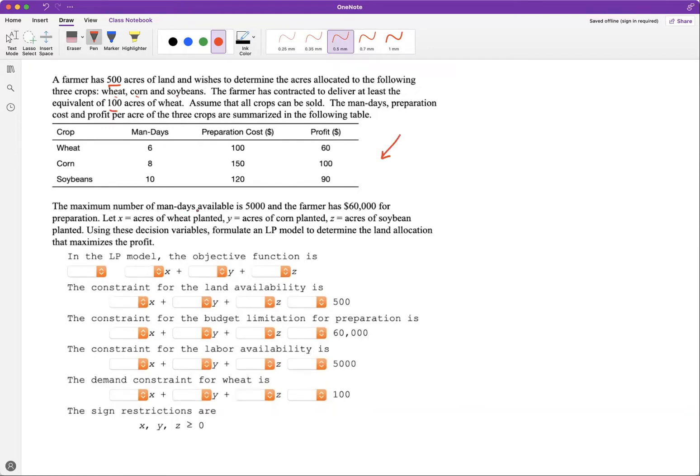So the maximum number of man-days available is this much, and the farmer has this for preparation. So X, Y, Z represent the different areas of acreage allocated for each crop.